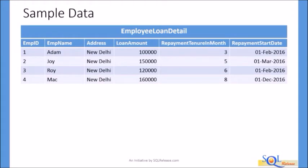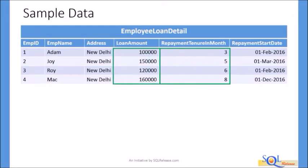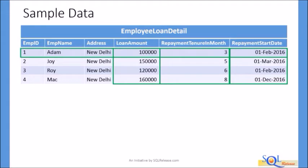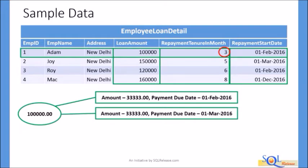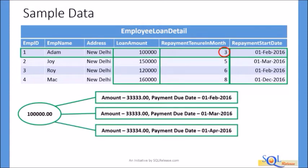For each employee, we need to generate as many rows as given in the Repayment Tenure in Month column by breaking the total loan amount into equal amounts for each installment. However, the last installment should bring down the closing balance to zero. The repayment date should start from the date given in the Repayment Start Date column and repeat on the first day of each month till the loan amount becomes zero. Let's consider the first row as an example. It has three as the value in Repayment Tenure in Month, so we need to generate three rows. The first repayment amount and date will be 33,333 and 1st Feb 2016, the second will be 33,333 and 1st March 2016, and the third will be 33,334 and 1st April 2016.